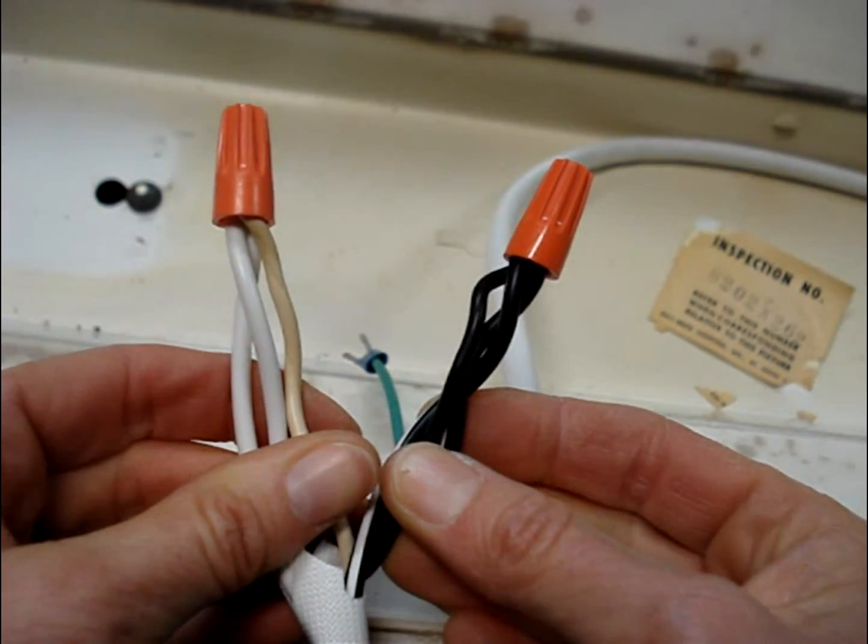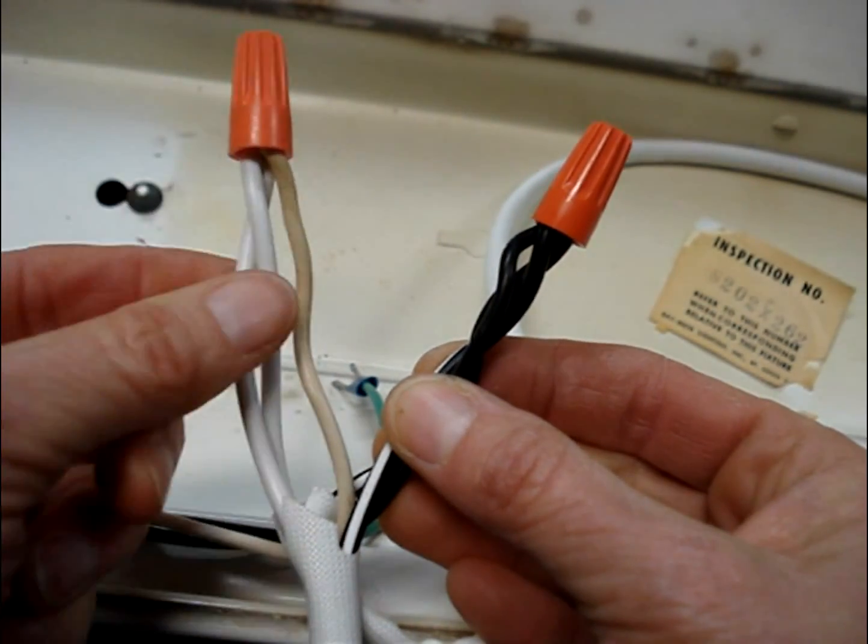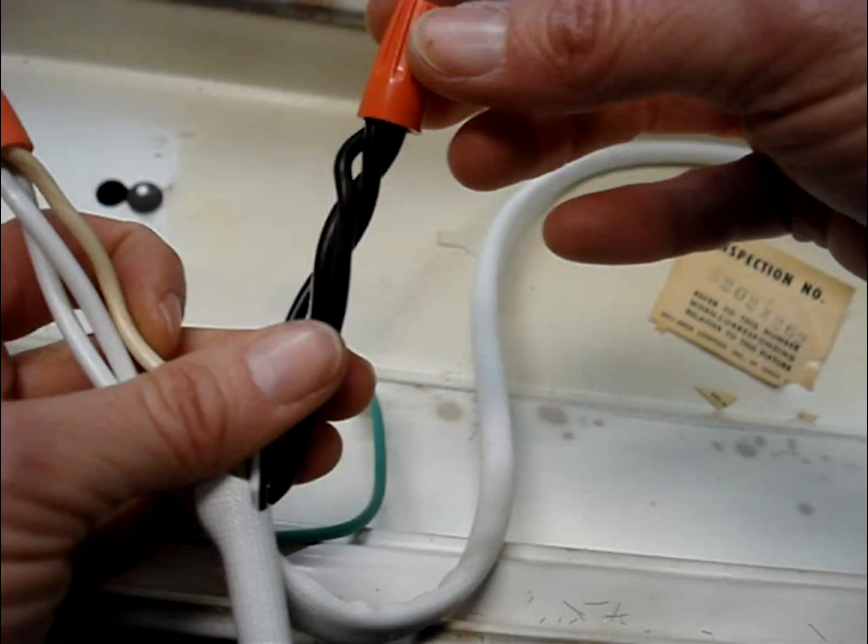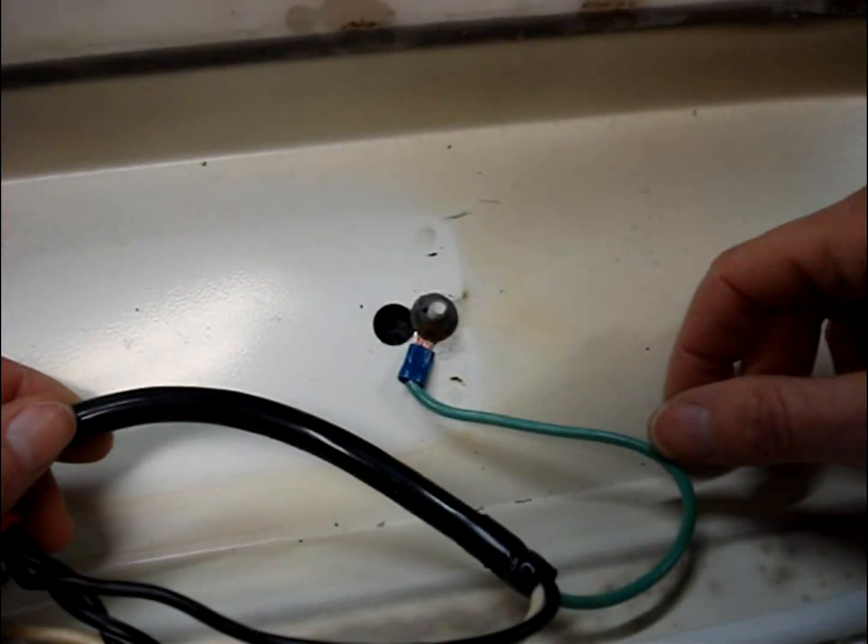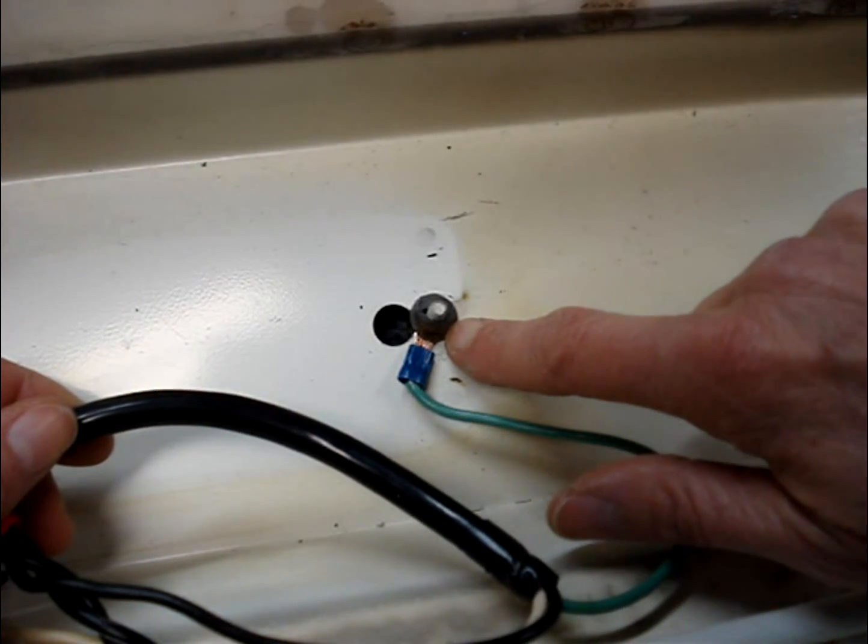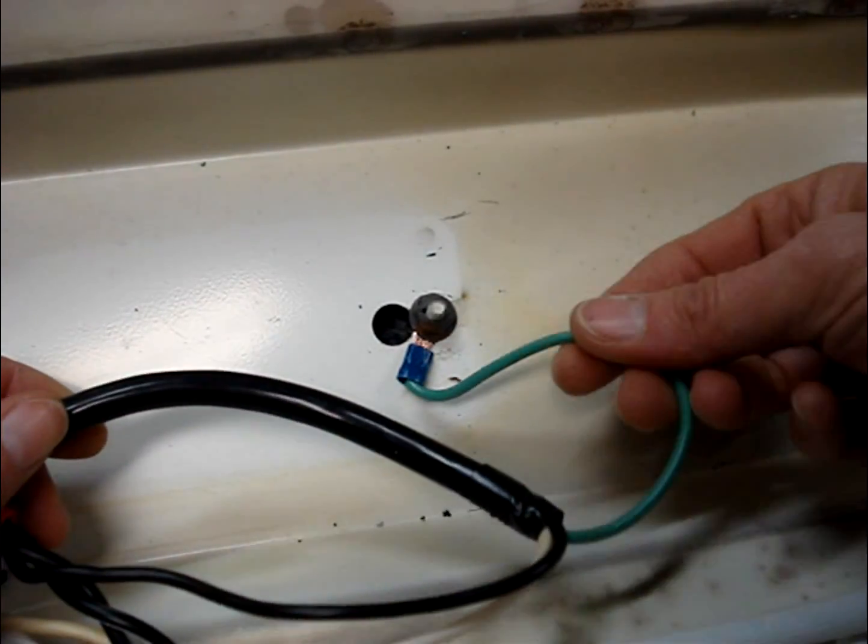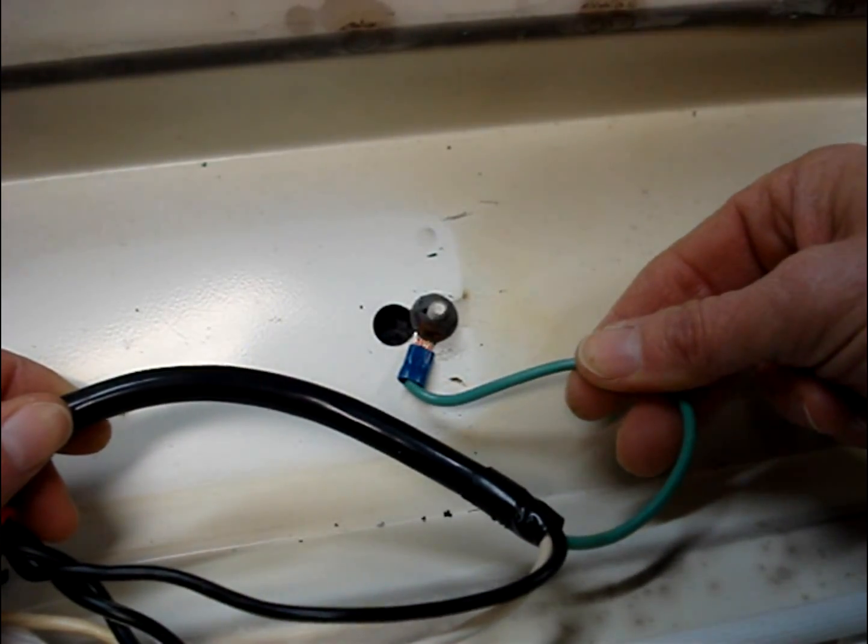Whether you use wire nuts or the push-in connectors, you should have the three white neutral wires connected together and the three black hot wires together. Connect the ground wire to the metal part of the fixture. It could be a green wire or perhaps a bare wire. They're both ground.